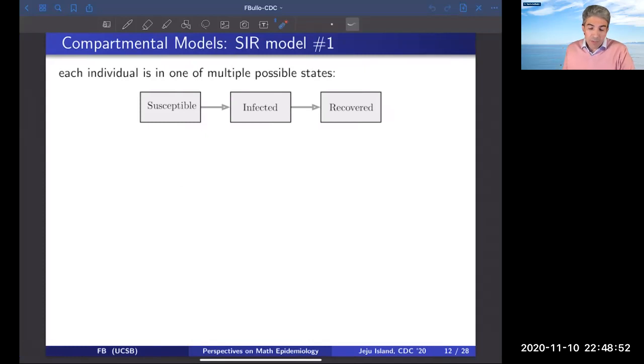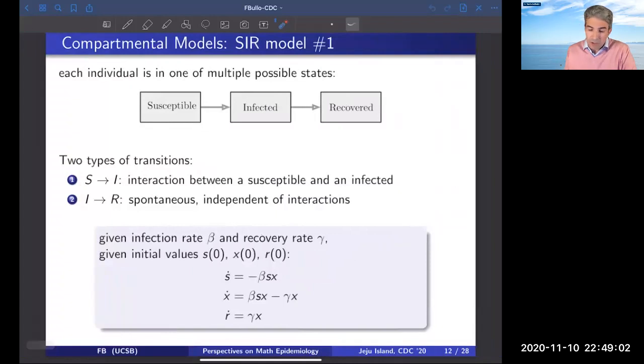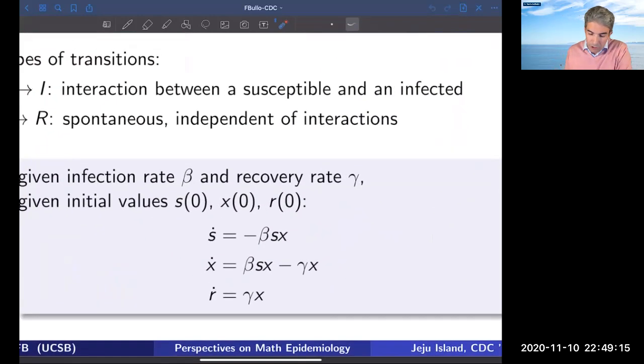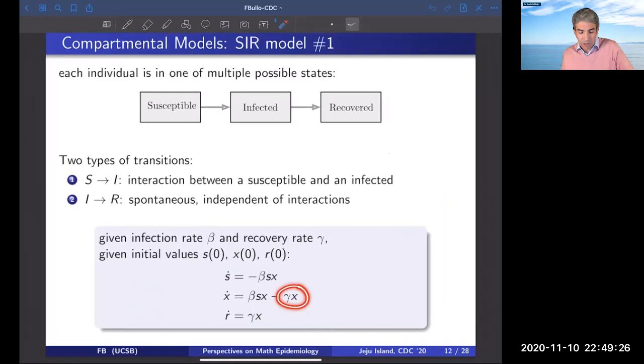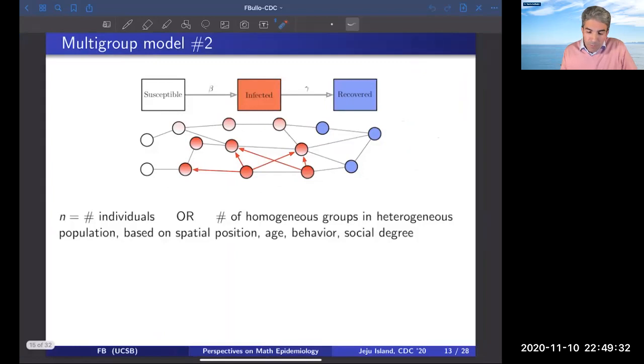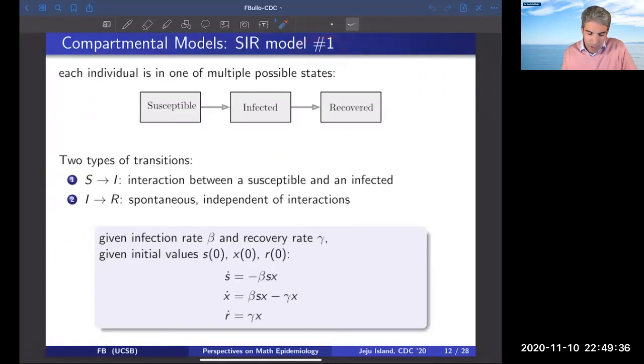The classic SIR scalar model is the one in which each individual in the population belongs to one of three possible states. There are transitions. This is a spontaneous transition from infected to recovered, whereas the transition described in the first arrow requires the interaction between individuals in both compartments. When you look at the equation, you have a nonlinearity that appears for transitions that require individuals in two compartments, whereas you have linear transitions for cases in which the transitions are spontaneous and independent of interactions. This is model one. This is a very simple model. It's been fully analyzed.